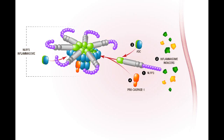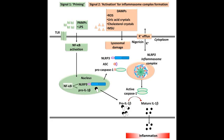Inflammasomes containing three of these NLRPs — IPAF/NLRC4, NLRP3 (also called cryopyrin), and NLRP1 — have been well studied. When these NLRPs are activated by the presence of microbial products or changes in the amount of endogenous molecules or ions in the cytosol, they bind other proteins through homotypic interactions between shared structural domains, thereby forming the inflammasome complex.